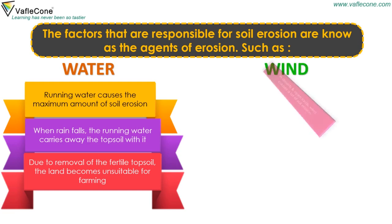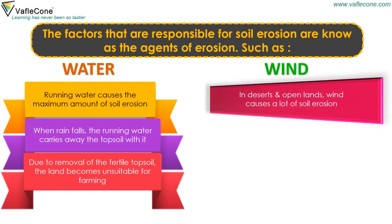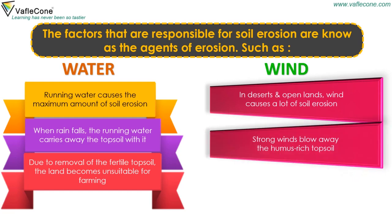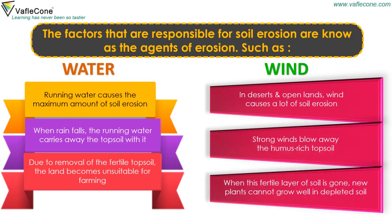Wind: In deserts and open lands, wind causes a lot of soil erosion. Strong winds blow away the humus-rich topsoil. When this fertile layer of soil is gone, new plants cannot grow well in the depleted soil.